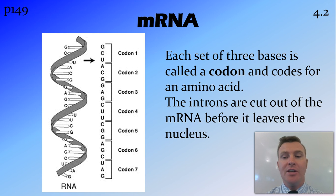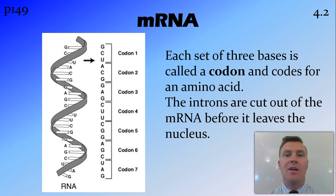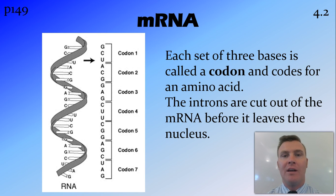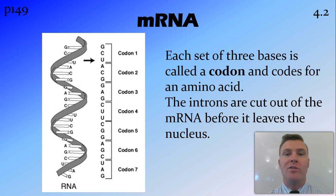After this, the introns are cut out — so the mRNA is trimmed, getting rid of those sections that don't code for amino acids. It's then glued back together before leaving the nucleus. So by the time the mRNA leaves the nucleus, it is a chain of codons that code directly for amino acids with none of that non-coding DNA between them.